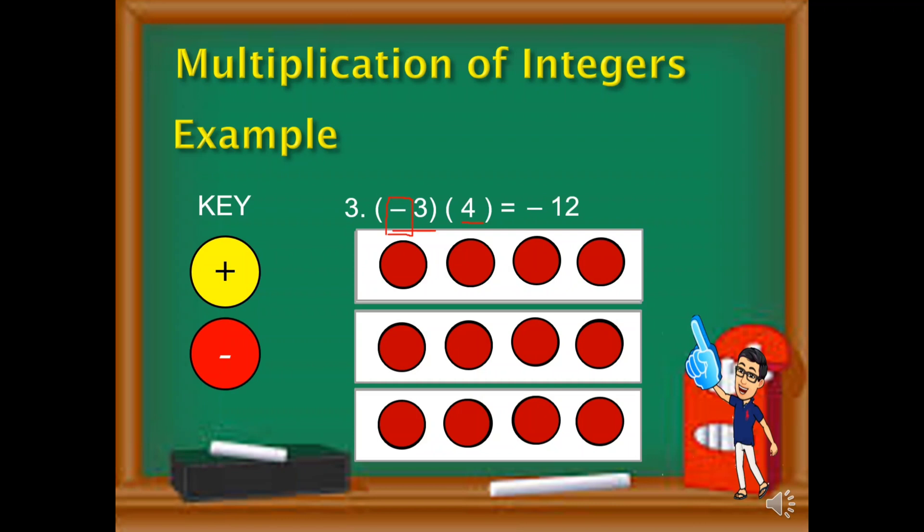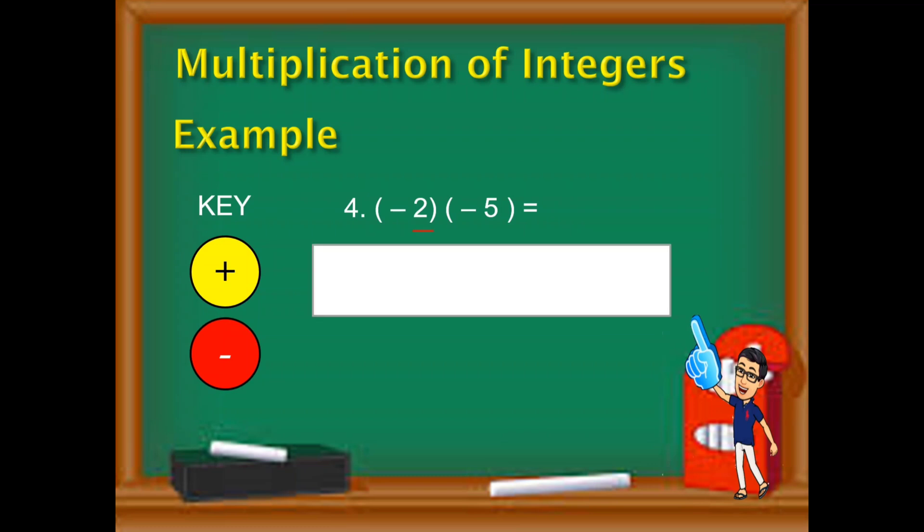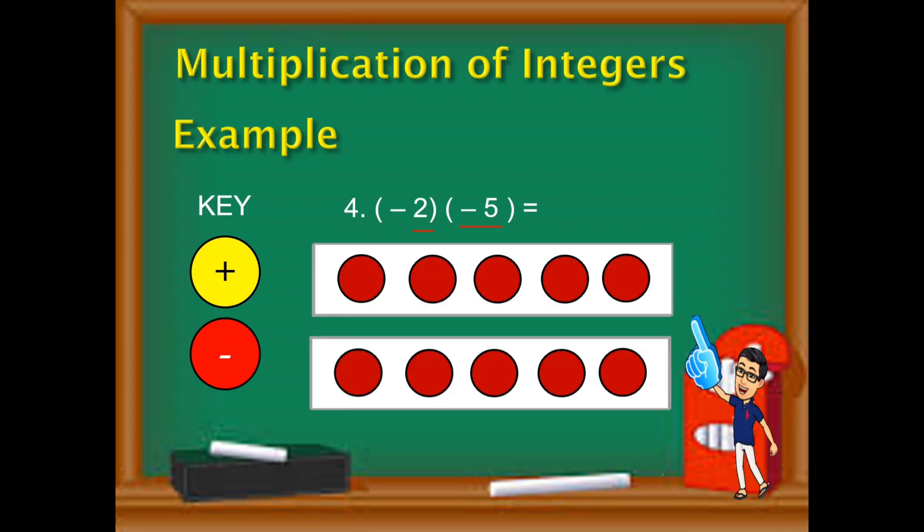Let's look at the next example. The fourth example is negative 2 times negative 5. It's almost the same in number 3. Negative 2 yung first integer, kaya lang ito ay negative ang second integer. So ibig sabihin, magkakaroon tayo ng dalawang group. Dalawang groups of this one. Negative 5, ibig sabihin limang red chips. Dalawang group ng limang red chips.